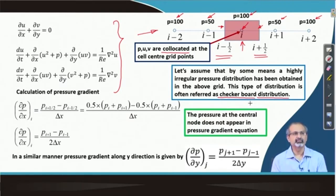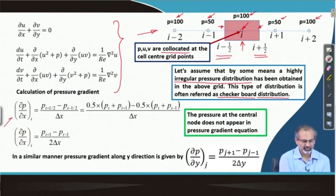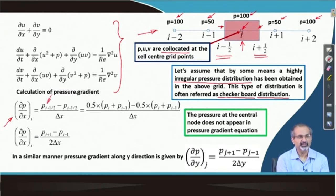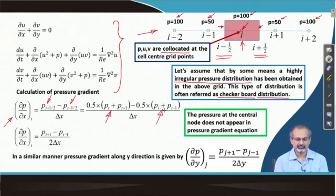If this irregular pressure distribution has been obtained on this grid, can the way velocities and pressures are stored recognize this pressure irregularity in terms of a pressure gradient? We compute del p del x at grid point i as the interpolated pressure at i plus half minus interpolated pressure at i minus half, divided by the grid spacing. Using linear interpolation at i plus half based on i and i plus 1, and similarly at i minus half, when you take the difference, p_i drops off altogether.